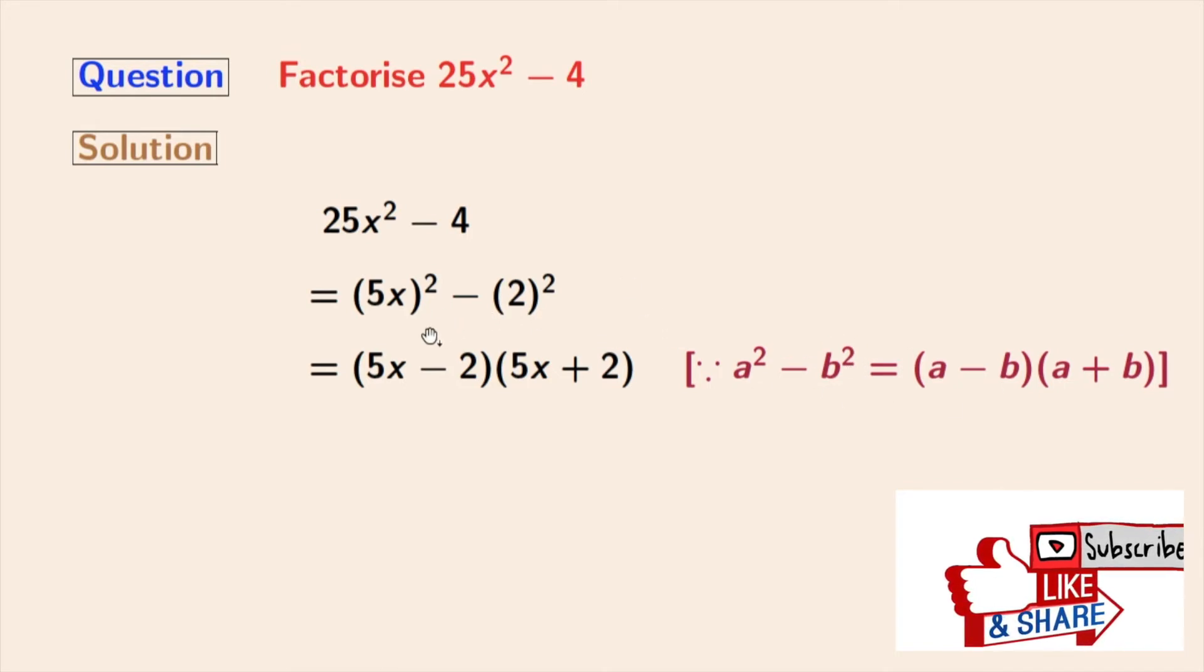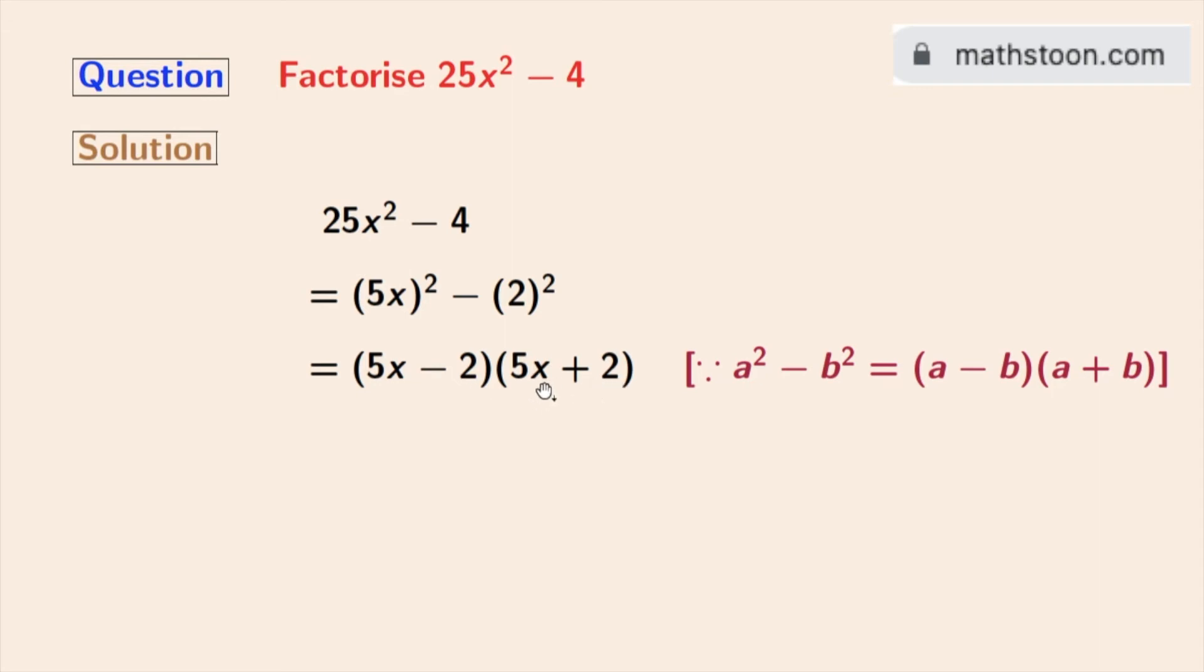Applying that formula, we get (5x)² - (2)² = (5x - 2)(5x + 2). So finally, we get 25x² - 4 = (5x - 2)(5x + 2). This is our desired factorization.